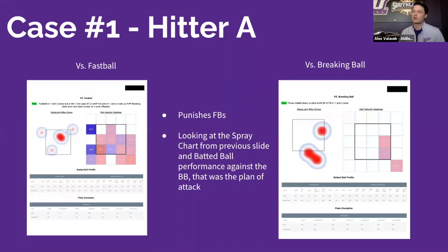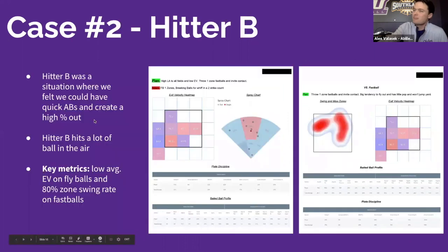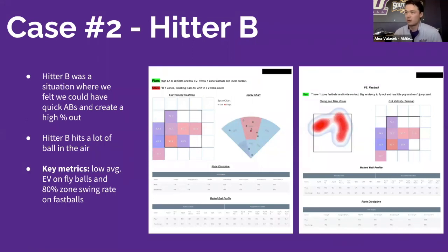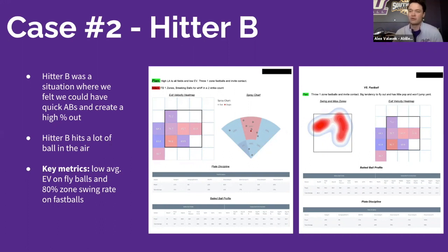The second hitter is more of a simpler case. This guy does a good job of putting the bat on the ball — not a ton of swing and misses — but we can see he's hitting the ball in the air a lot with lower exit velocity on fly balls, and an 80 percent zone swing rate on fastballs in the zone. He had about one double up to the fall World Series across all the scrimmages. So we'll hedge our bets — quick pitch, high fastball, let him fly out, quick at bat, minimize pitch count, and focus on the guys coming up later in the lineup.